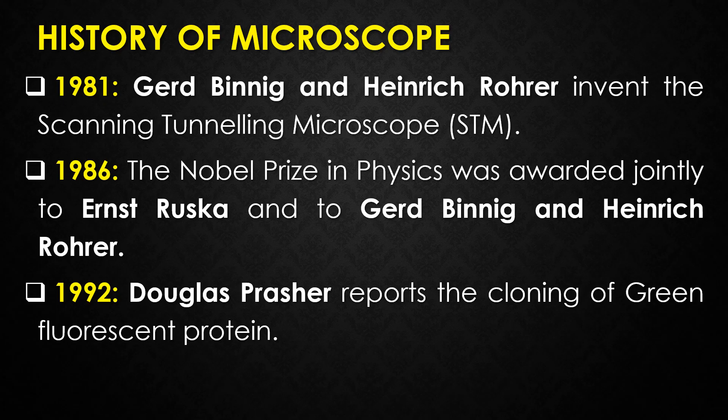In 1986, the Nobel Prize in Physics was awarded jointly to Ernst Ruska, Gerd Binnig, and Heinrich Rohrer. For Ernst Ruska, the prize was awarded for his work on the electron microscope; for Gerd Binnig and Heinrich Rohrer, the prize was awarded for the discovery of the scanning tunneling microscope.